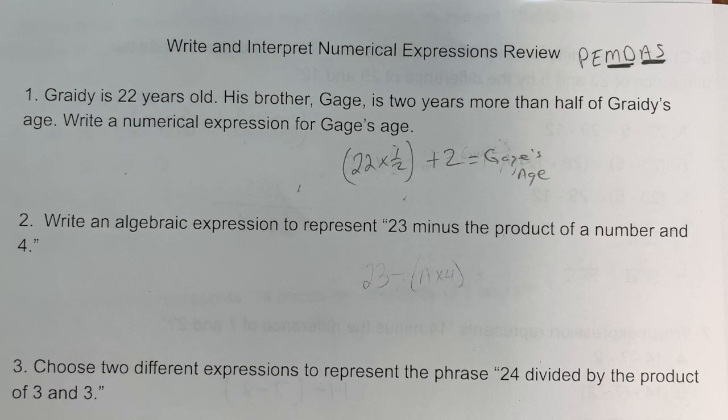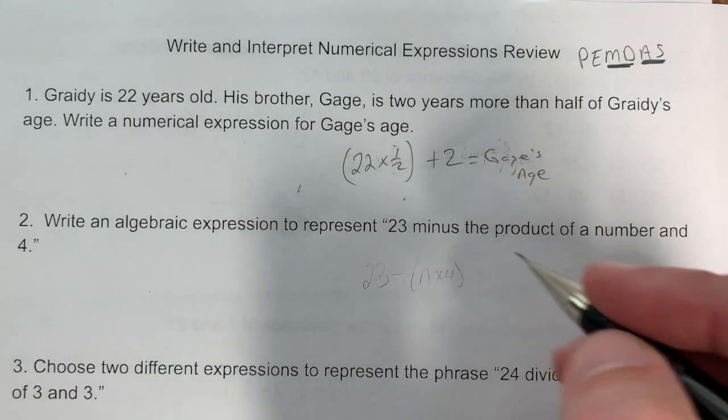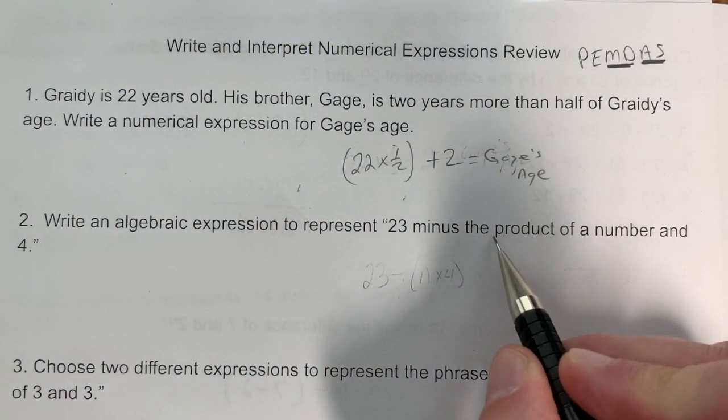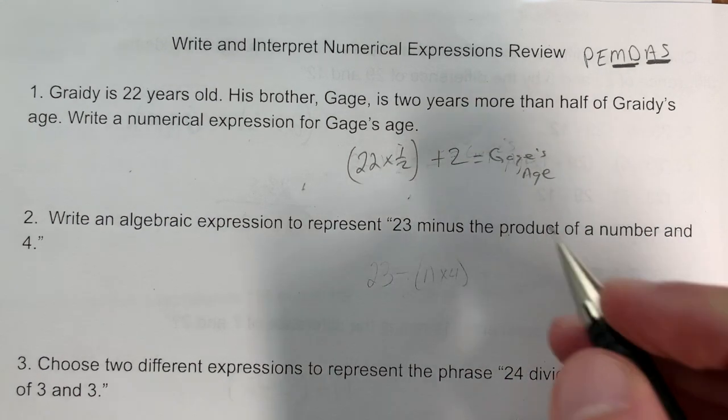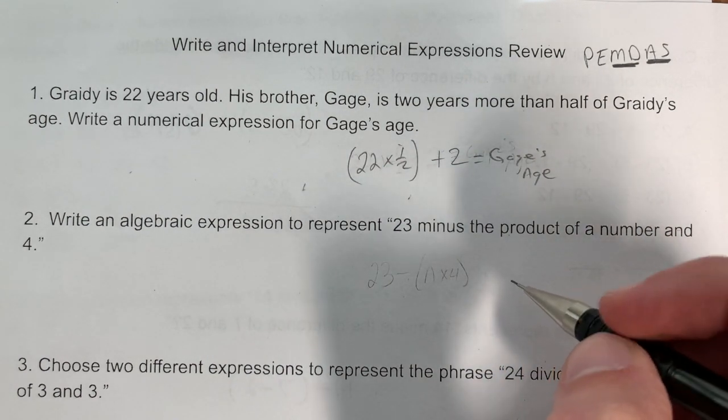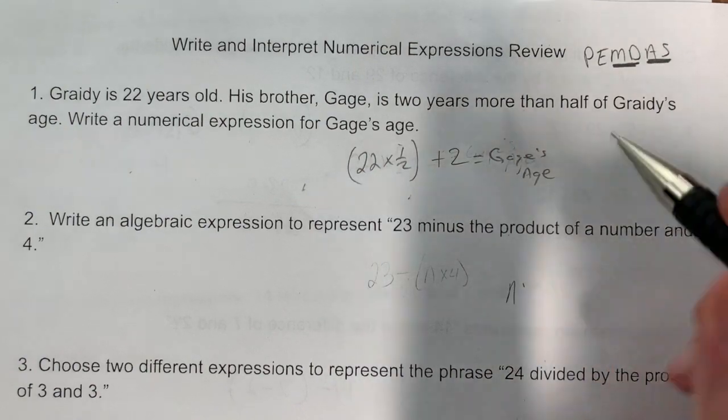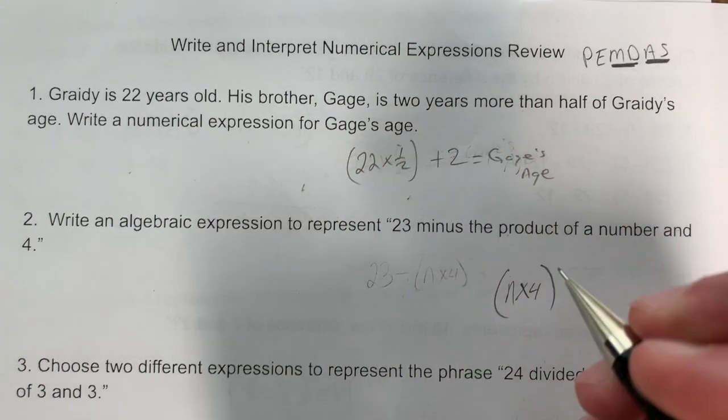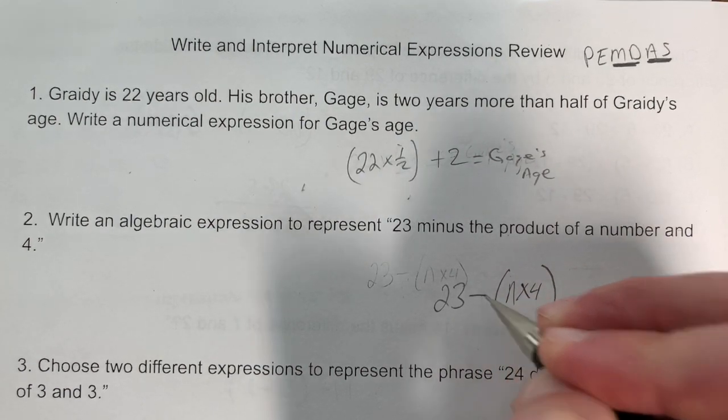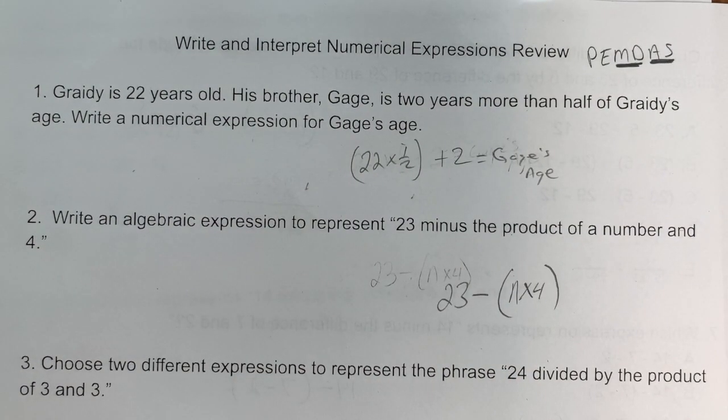Problem 2: 23 minus the product of a number and 4. First we find the product - the product is the answer to multiplication. So we do n times 4, then take 23 minus that: 23 - (n × 4).